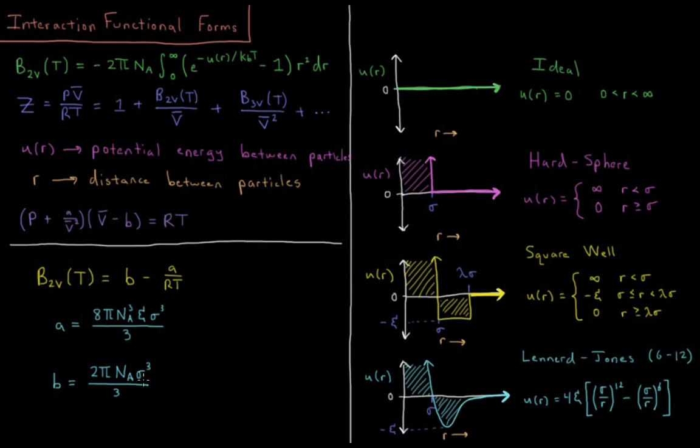So that covers the basics of how these various functional forms arise, what they do to the virial coefficient, and thus how they affect the non-ideal behavior of molar volume as a function of temperature, interaction strength, and effective molecular size.